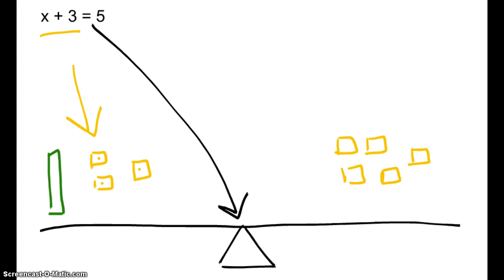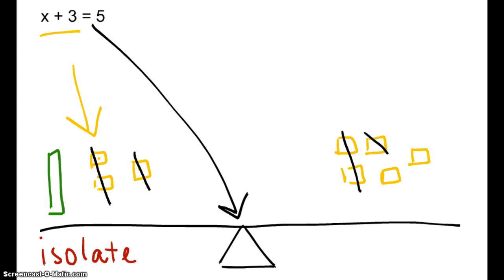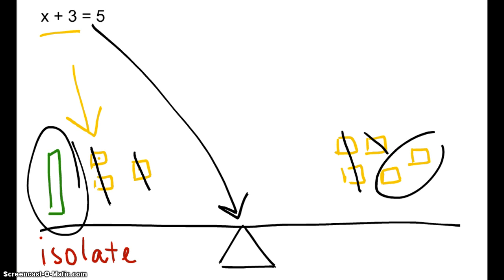So what we want to do is isolate — that is so important. Isolate means get the variable by itself. Get this x all by itself. So how do we get x by itself? If I take off these 3 positives here, then on this side I can also take off 3 positives and still remain balanced. So I see that my x has the same weight as 2 positives.